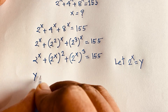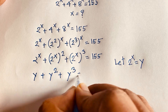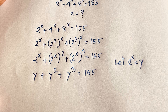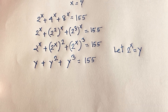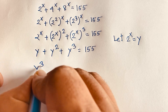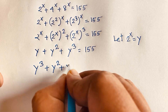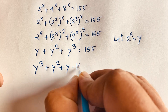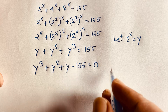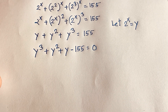So the equation is y cubed plus y squared plus y equals 155. This is a cubic equation. Moving 155 to the other side gives us y cubed plus y squared plus y minus 155 equals zero.